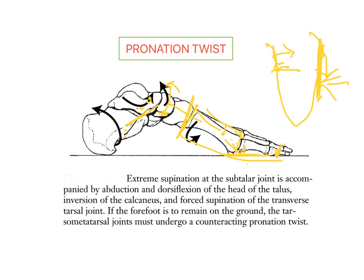Because eversion accompanies plantar flexion of the first and second rays, and dorsiflexion of the fourth and fifth rays, the forefoot as a whole undergoes a pronation twist — this process is called the pronation twist. Like the supination twist, the pronation twist can vary in configuration, and while it may provide adequate counter-rotation for moderate hindfoot supination, it may be inadequate to maintain forefoot stability in extreme supination.